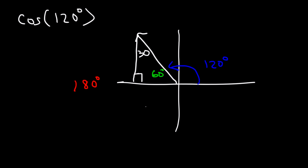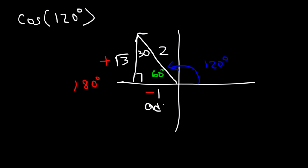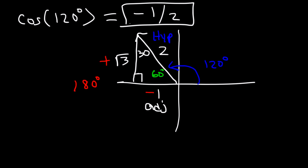Across from the 30 is 1, across from the 60 is √3, and the hypotenuse is 2. In quadrant 2, x is negative and y is positive. Focusing on the 60-degree reference angle, cosine is adjacent divided by the hypotenuse. Cosine of 120 is negative because it's in quadrant 2, so cosine of 120 equals negative one half.